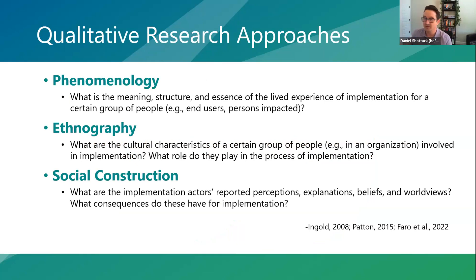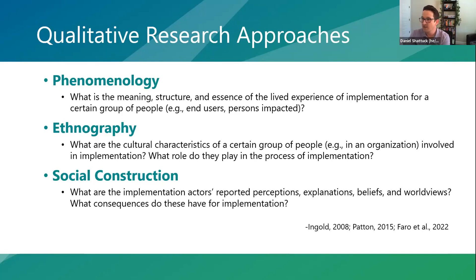Phenomenology comes out of philosophy and asks us to seek data on the meaning, structure, and essence of lived experience — thinking about what lived experience is like in implementation for a certain group of people such as end users. Ethnography comes out of anthropology and asks us to think about the cultural characteristics of a group, such as an organization or institution involved in implementation, and how those characteristics impact the process of implementation.